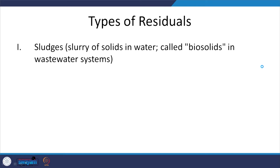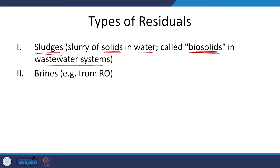Types of residuals: one is sludges — a slurry of solids in water. When do we call it biosolids? For wastewater systems, typically the ones from activated sludge and such. We also looked at RO and such — RO or even other membrane-based techniques, you have considerable reject, and in that reject you have high concentration of your relevant compounds. Even that you need to look at, but we are not going to look at that in great detail.